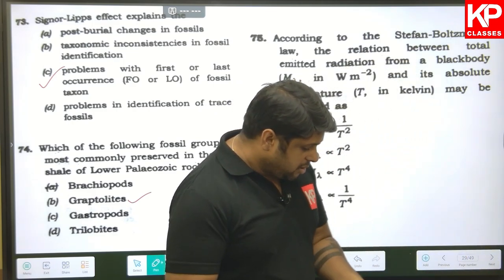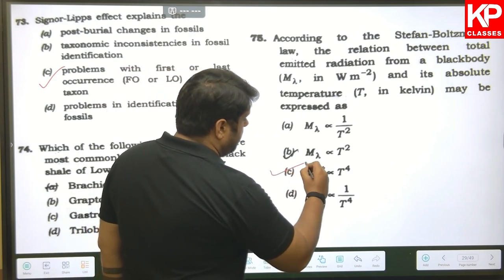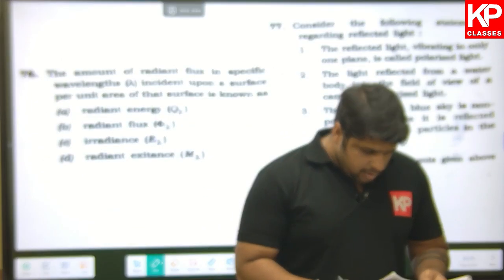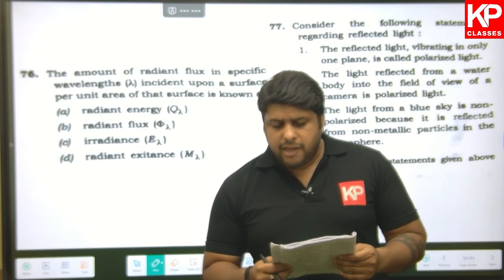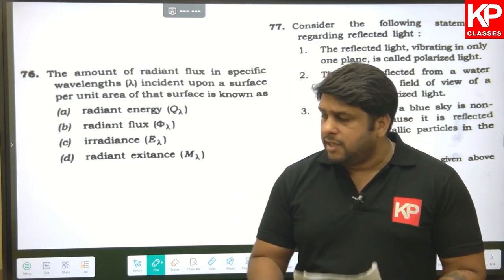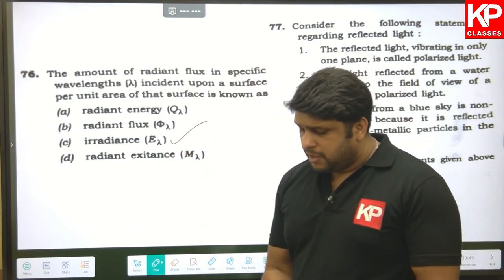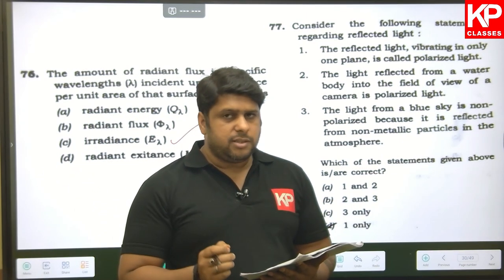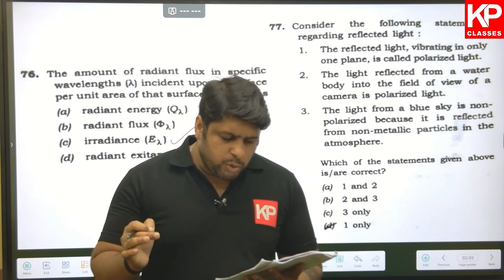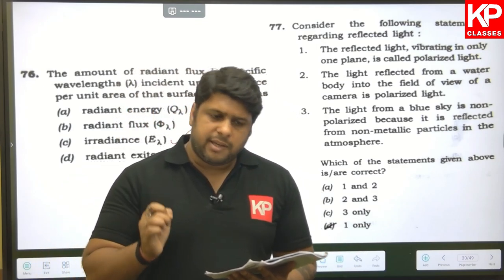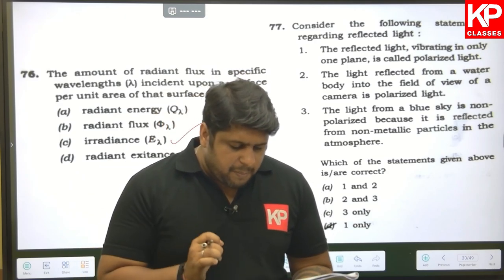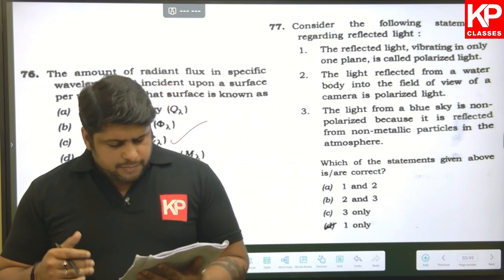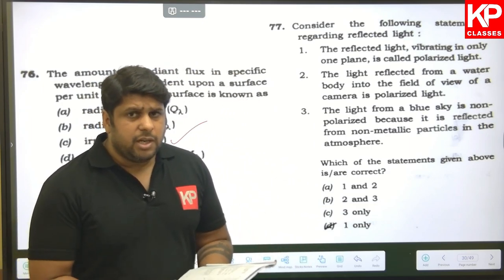Question seventy-five: the Stefan-Boltzmann law — radiant energy varies with T raised to the power of four, so that is our answer. Question seventy-six: the amount of radiant flux in specific wavelengths incident upon a surface per unit area is known as irradiance. Question seventy-seven: regarding polarized light — reflected light vibrating in only one plane is polarized (correct); light reflected from a water body into a camera is polarized (correct); light from a blue sky is non-polarized because it is reflected from non-metallic particles in the atmosphere (also correct). Given the options, the answer is one and two.